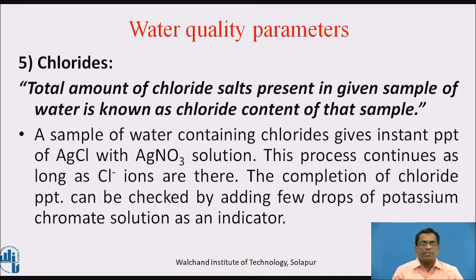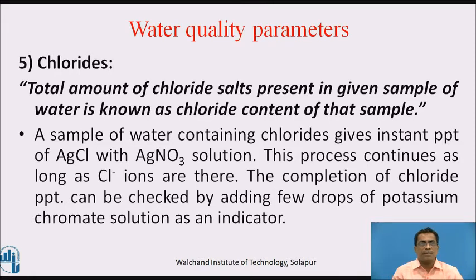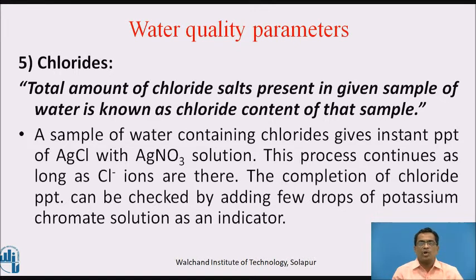Next water quality parameter: chlorides. The total amount of chloride salts present in a given sample of water is known as the chloride content of that sample. A sample of water containing chlorides gives an instant precipitate of silver chloride when treated with silver nitrate solution. This process continues as long as chloride ions are present in water. The completion of chloride precipitation can be checked by adding a few drops of potassium chromate as an indicator.